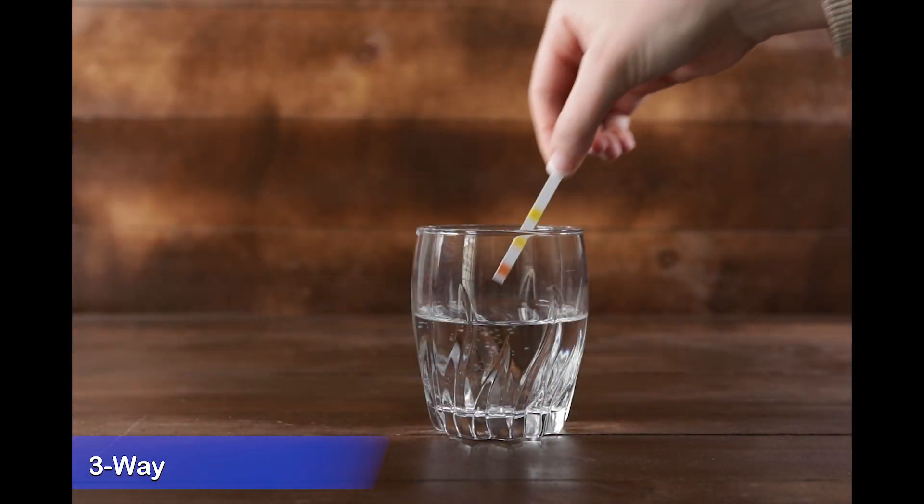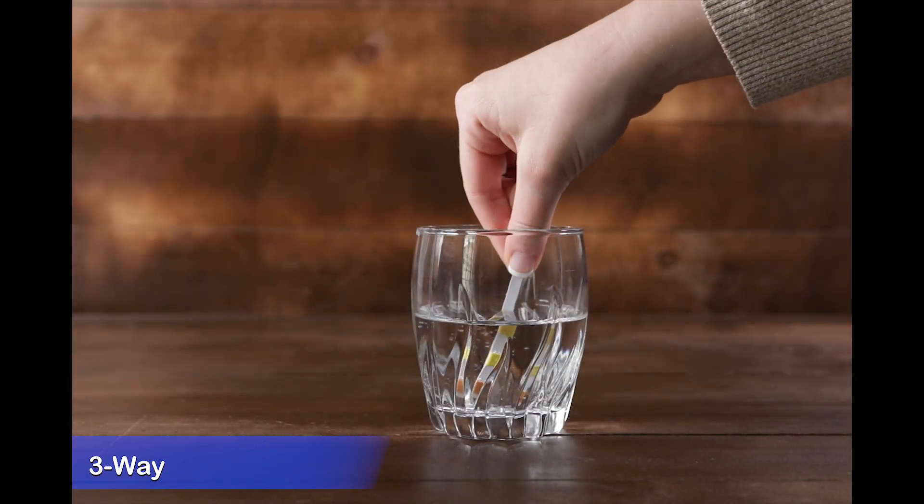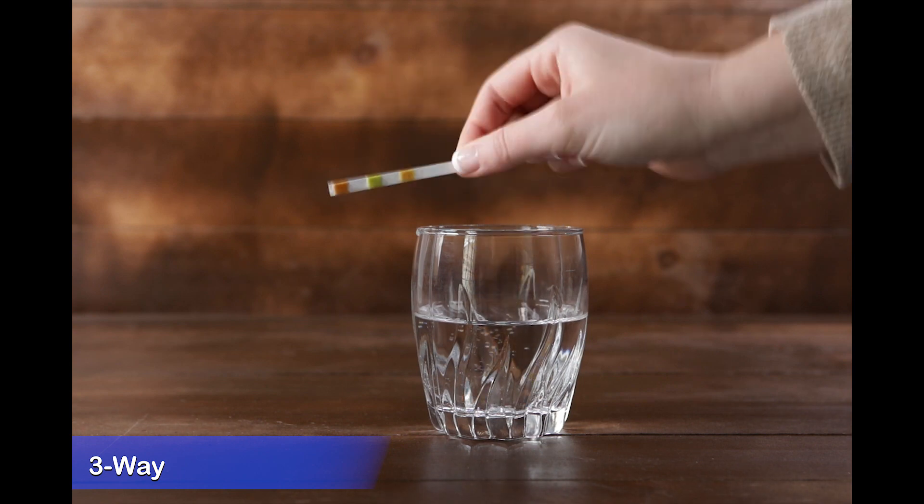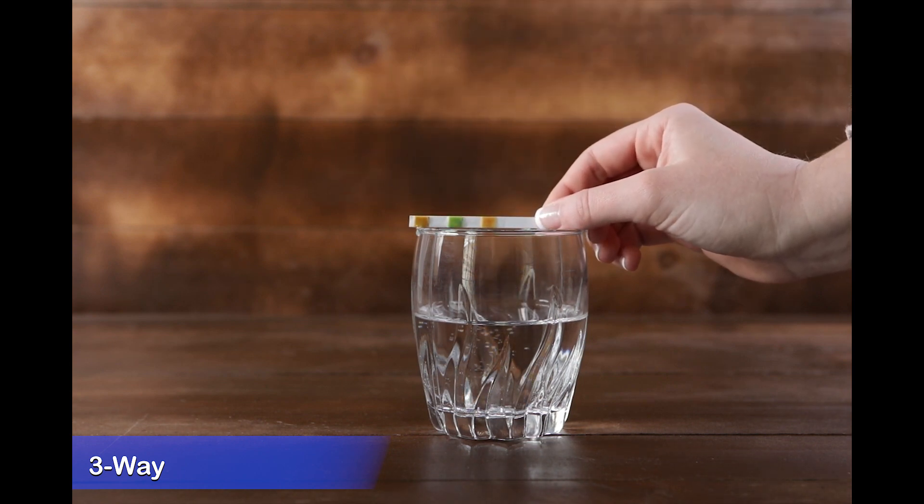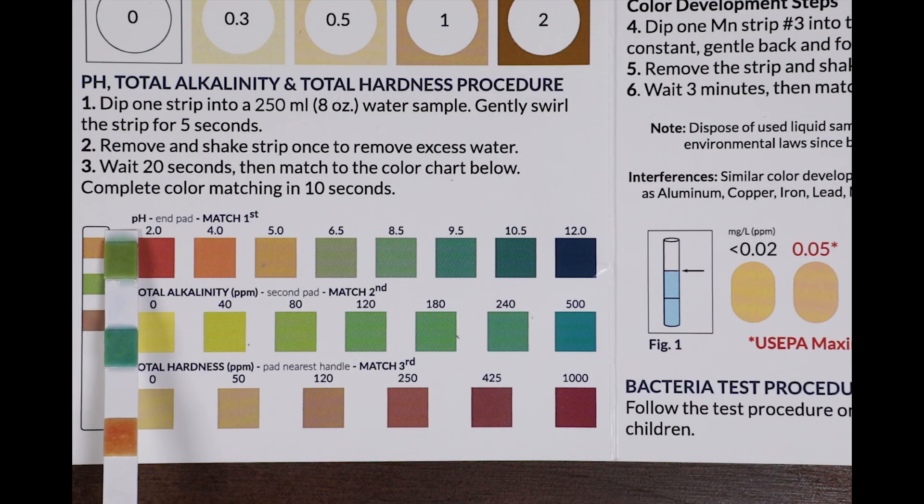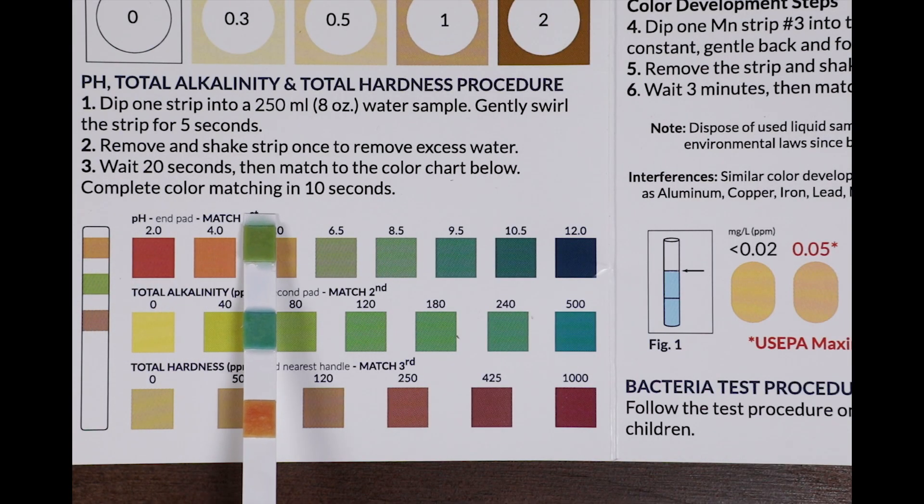Dip the three-way strip into eight ounces of water for five seconds. Remove, shake, and wait 20 seconds for the color to develop. Immediately match the strip to the color chart. The closest match indicates the level.